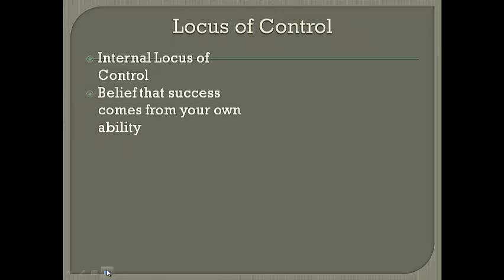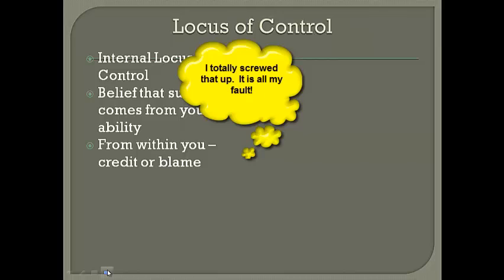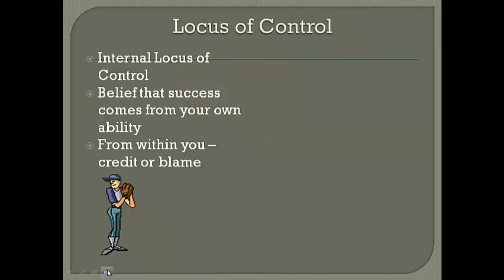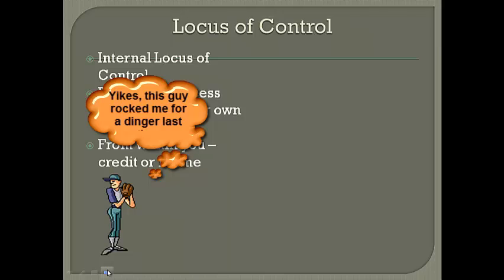Lastly, we're going to look at locus of control. Locus refers to location — where does the control for your success or behavior lie? An internal locus of control is the belief in your own natural ability; it comes from within you. You believe your success comes from your efforts and your stick-to-itiveness. If you get a good grade, it's because you worked hard. If you made varsity, it's because you practiced hard. But people with an internal locus of control can also be hard on themselves when things go wrong — if someone hits a home run off you in the bottom of the seventh and you lose, you might blame yourself.